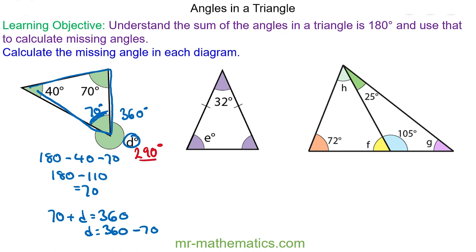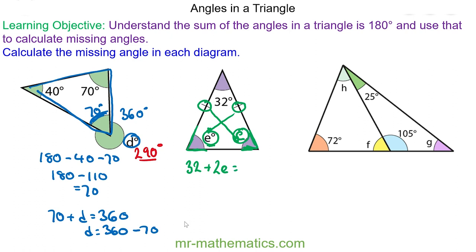For angle E we have an isosceles triangle, which is noted by these two symbols here. These two symbols mean that the two opposite angles are the same. So whatever this angle is, this angle is the same — and this one is called E, so this one will also be called E. So now we have the three angles: 32 plus two E's will equal the angles in a triangle, which is 180.